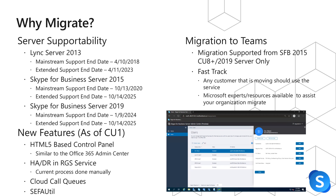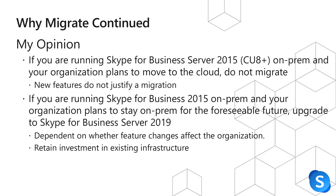Another reason to migrate would be a migration to Teams. If you're running Lync 2013, you need to look at upgrading to at least Skype for Business 2015 CU8 or higher, or Server 2019. There's a program from Microsoft called FastTrack that any customer can use, which provides access to Microsoft experts and resources to assist with migrating to Teams. But if you're not moving to Teams, you still benefit from the features that are here now with CU1 and Skype for Business Server 2019. A bit more on why migrate — and this is more or less my opinion — if you're running Skype for Business Server 2015 CU8 plus on-prem and your organization plans to move to the cloud, do not migrate. The new features do not justify migration; there's really no reason to migrate to 2019 if your goal is to end up in Teams in the cloud.